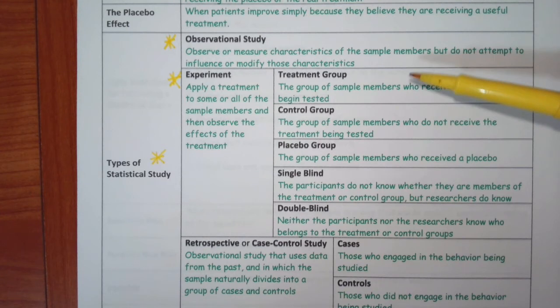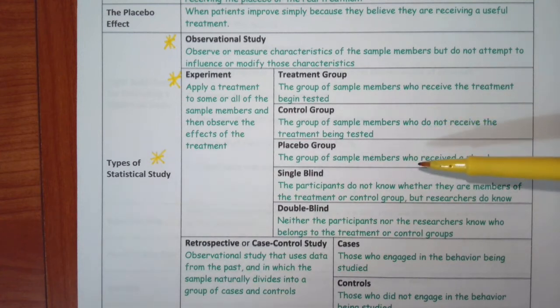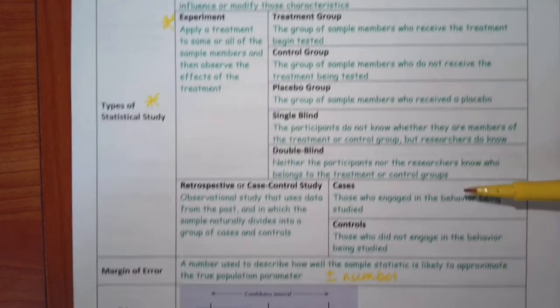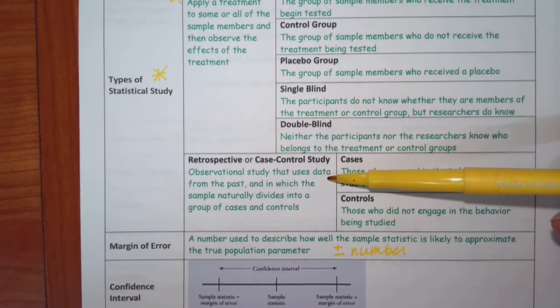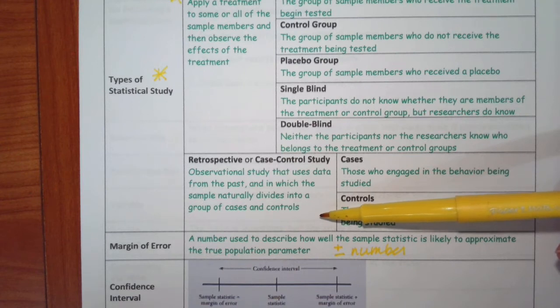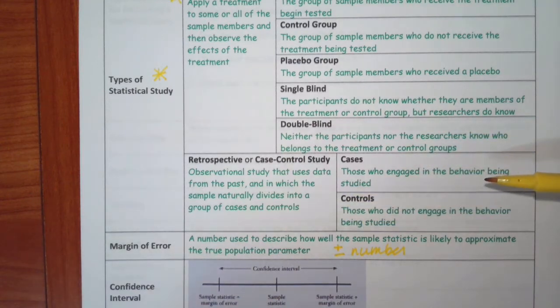So that would be splitting you into the treatment and control group. The treatment group would be those who get the leafy vegetables. The control group would be those who don't. Then the placebo group, that wouldn't apply there, but it would be a group that didn't get the medication but thought they did. Then a single-blind and double-blind study or who knows, it just depends on who knows what groups are which. If you're looking at an observational study, it's either going to be retrospective or case-controlled, and an observational study uses data from the past, and it naturally is divided into cases and control. Cases are those who engaged in the behavior, so in the situation with the leafy vegetables, these would be the people who eat the leafy vegetables, these are who don't.